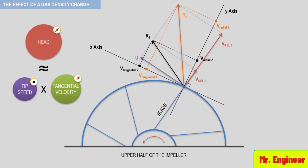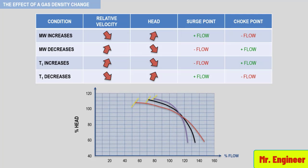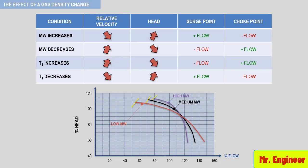The following table presents the effect of gas density changes on impeller produced head, surge point, and choke point. It can be seen from this graph that curve shape is influenced by gas density changes. Therefore, keep in mind that a low density gas will always have a greater flow range than a high density gas.